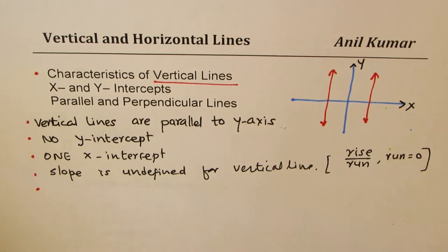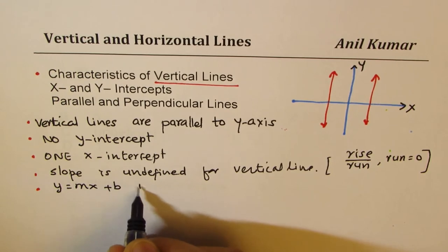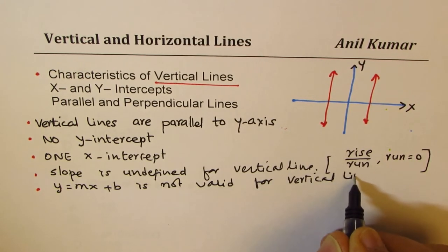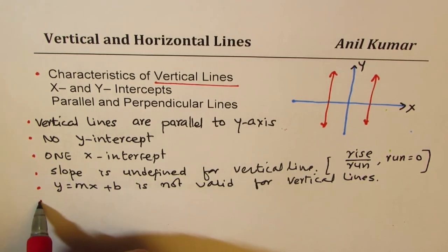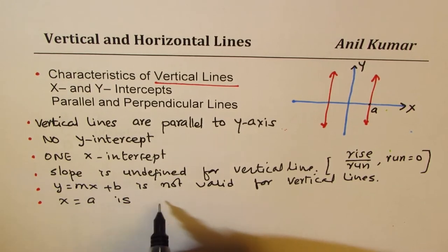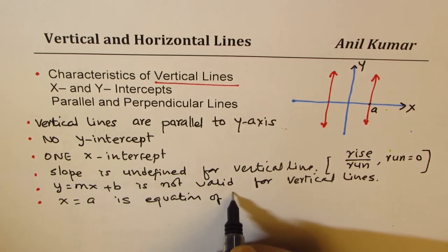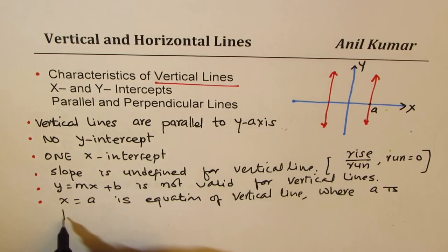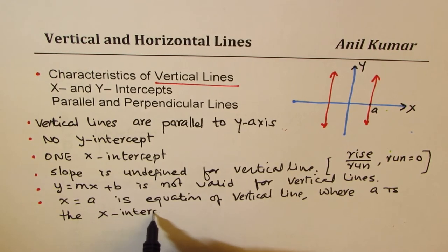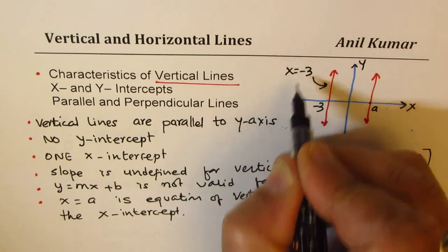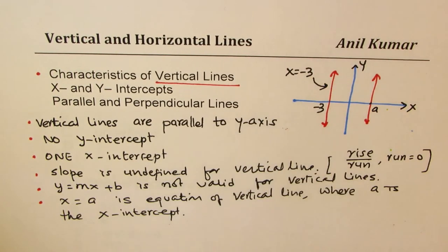Since Y = MX + B is not valid, what is the equation for a vertical line? We look at the X-intercept. If A is the X-intercept, then X = A is the equation of a vertical line, where A is the X-intercept. So if the X-intercept is minus 3, the equation of this line will be X = −3, meaning every point on the line has an X value of minus 3.